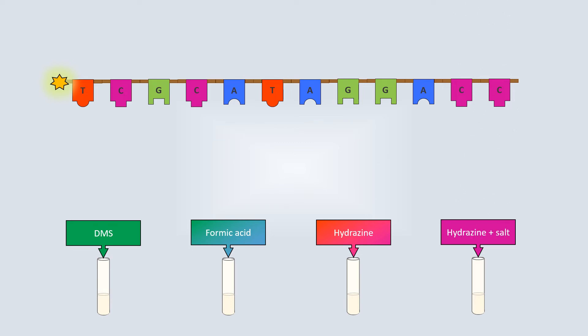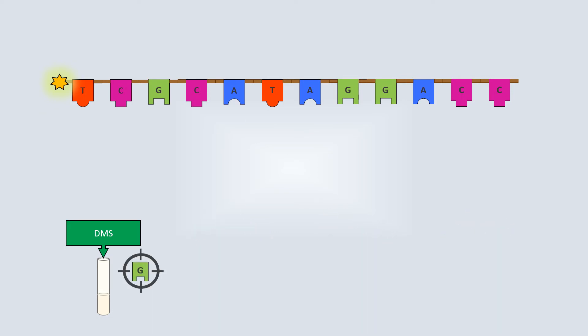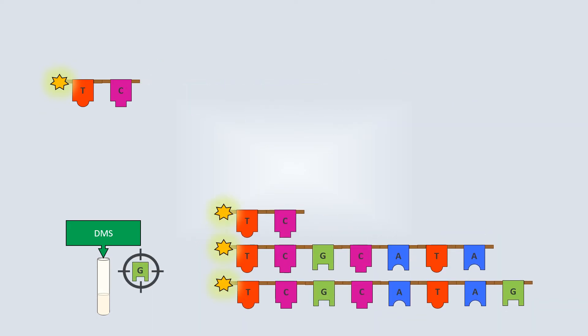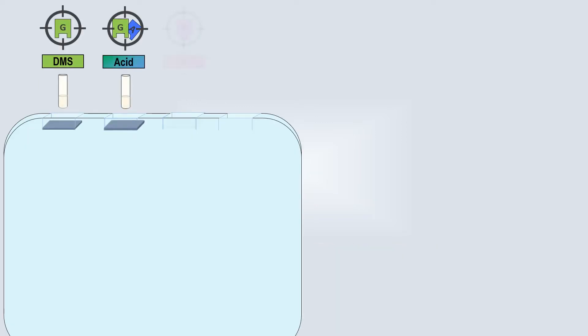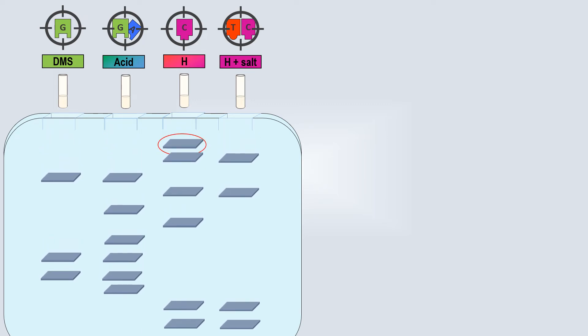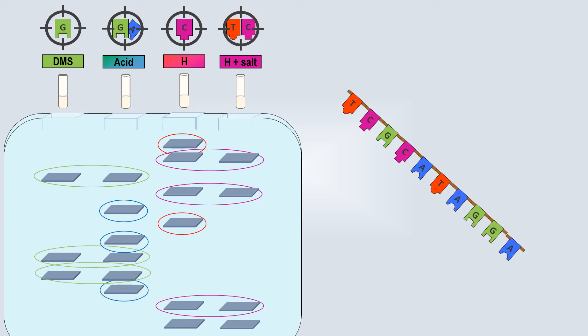The digestion will occur randomly at different positions, producing fragments of different lengths. Once all the treatments have been done, an electrophoresis separation process can be performed, and the results intuitively read to consequently define our original sequence. After the success of the Maxam and Gilbert method,